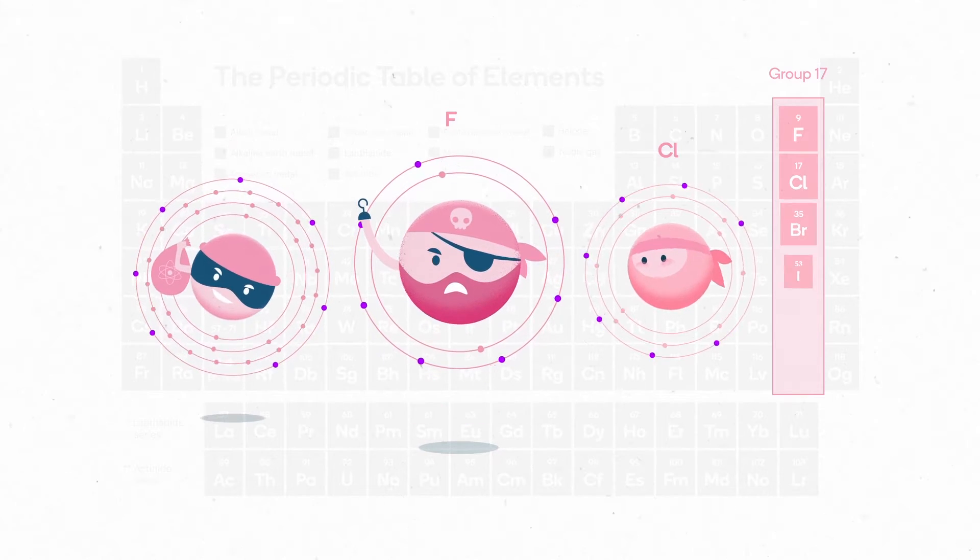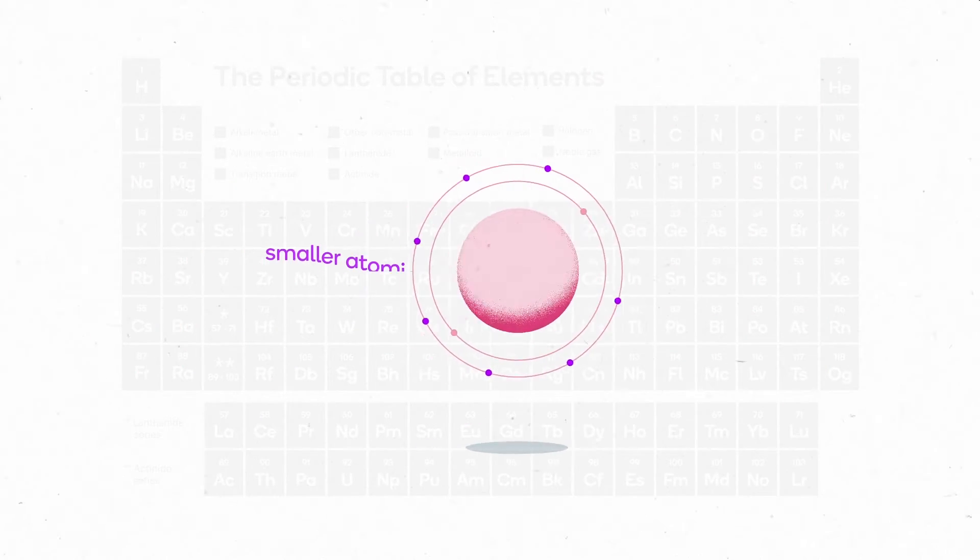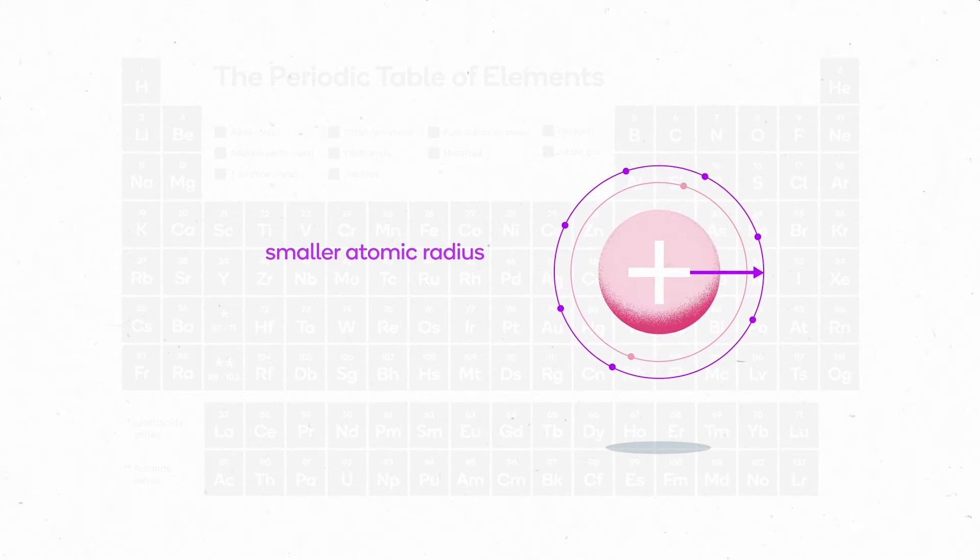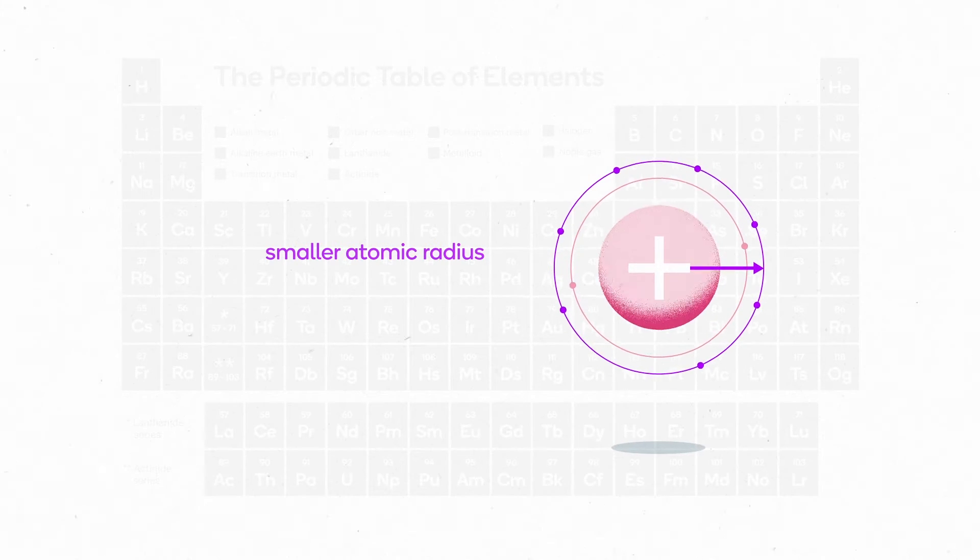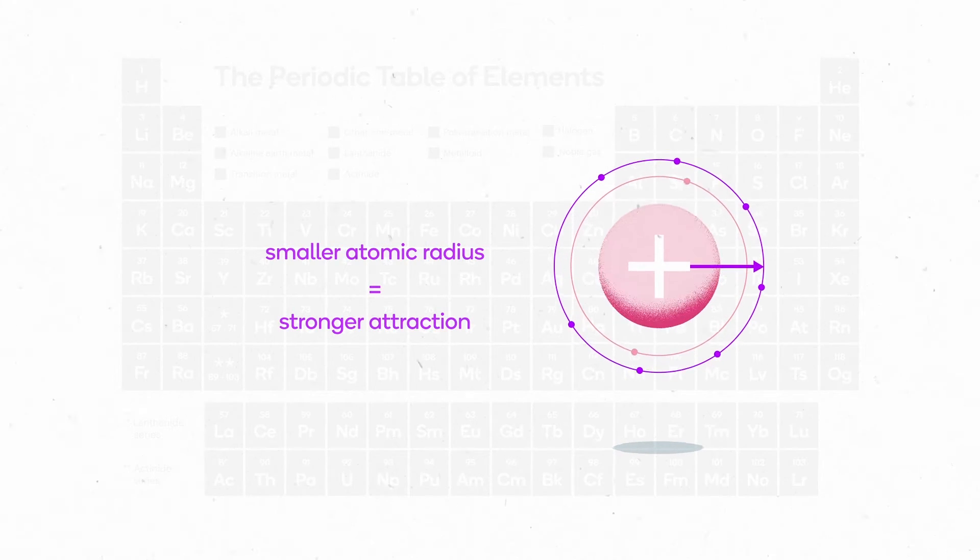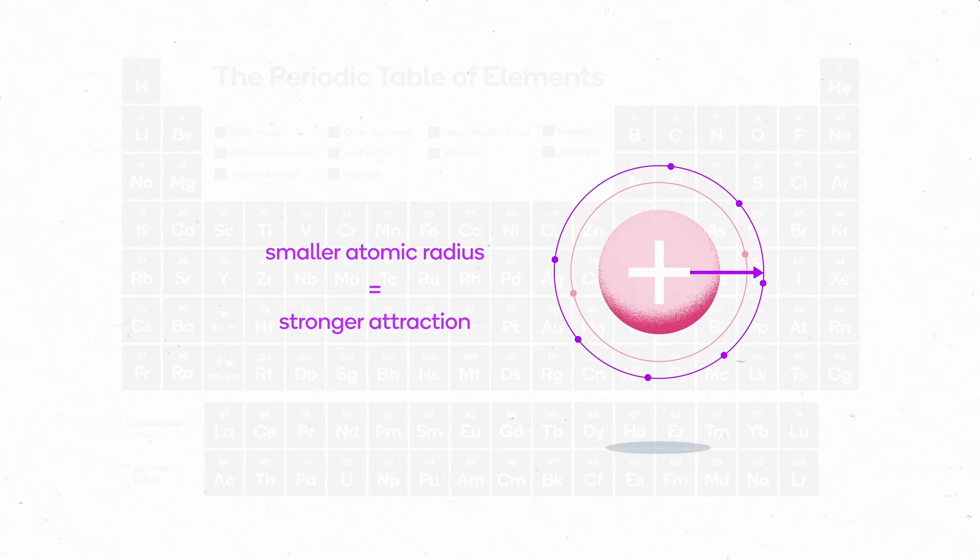A smaller atomic radius means that the valence electrons are closer to the positively charged nucleus and more strongly attracted to it. This strong attraction allows the atom to pull in another electron more easily, making it more reactive.